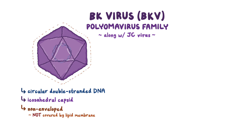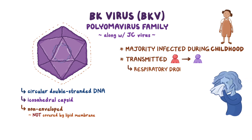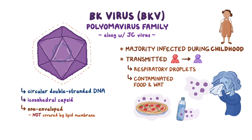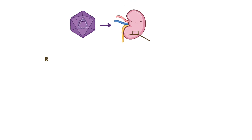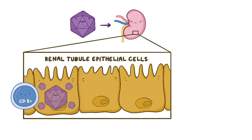The vast majority of the population is infected with BK virus during childhood. The virus is thought to be transmitted from person to person through respiratory droplets when someone coughs or sneezes, and by ingesting contaminated food and water. Once inside, the virus moves through the bloodstream and eventually reaches the kidneys, specifically the renal tubular epithelial cells where it starts to replicate. But the cytotoxic CD8-positive T cells in our immune system keep the virus in check by killing any cell that has replicated BK virus inside it.